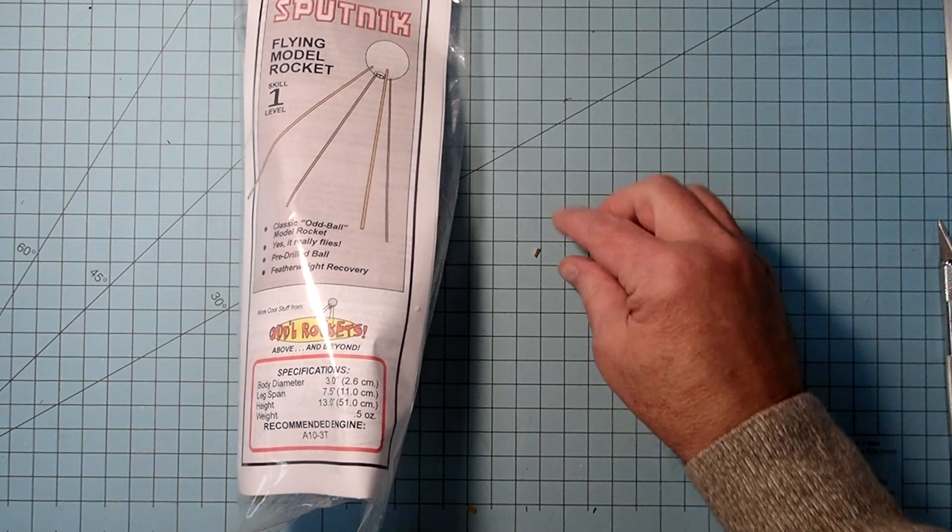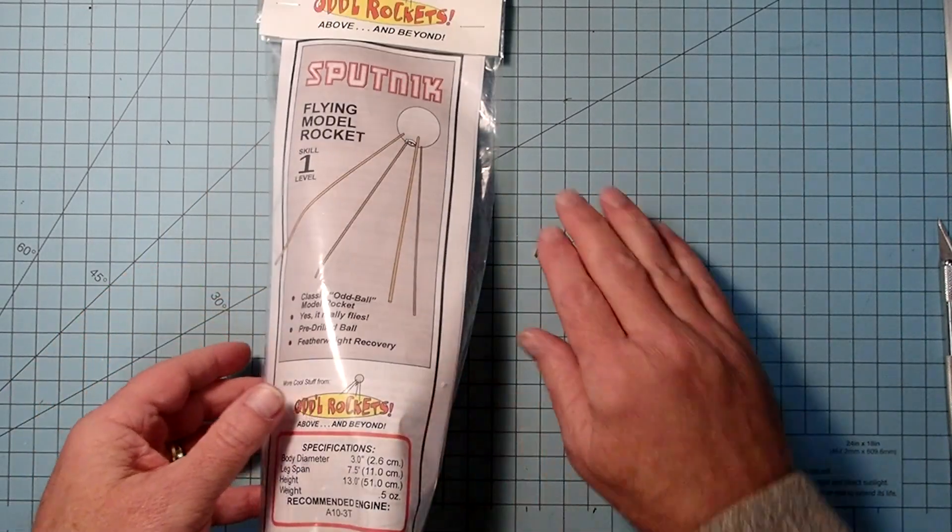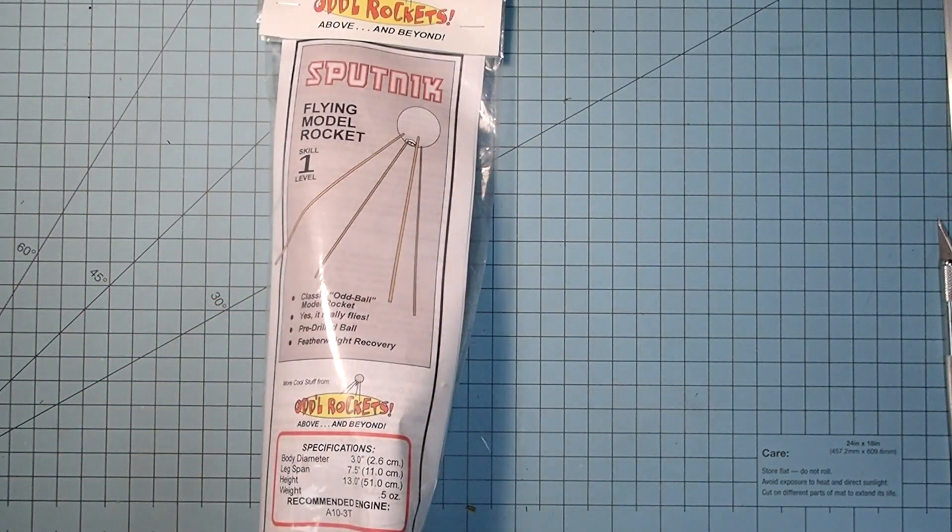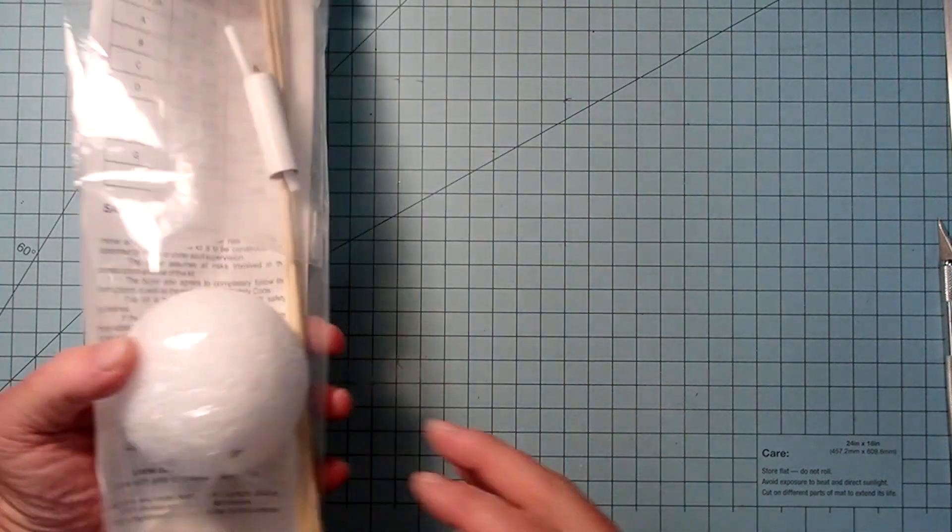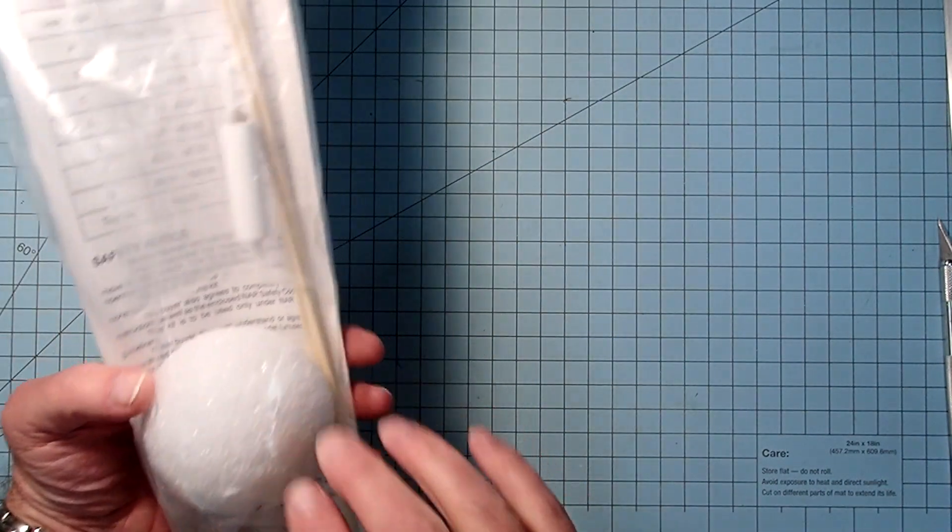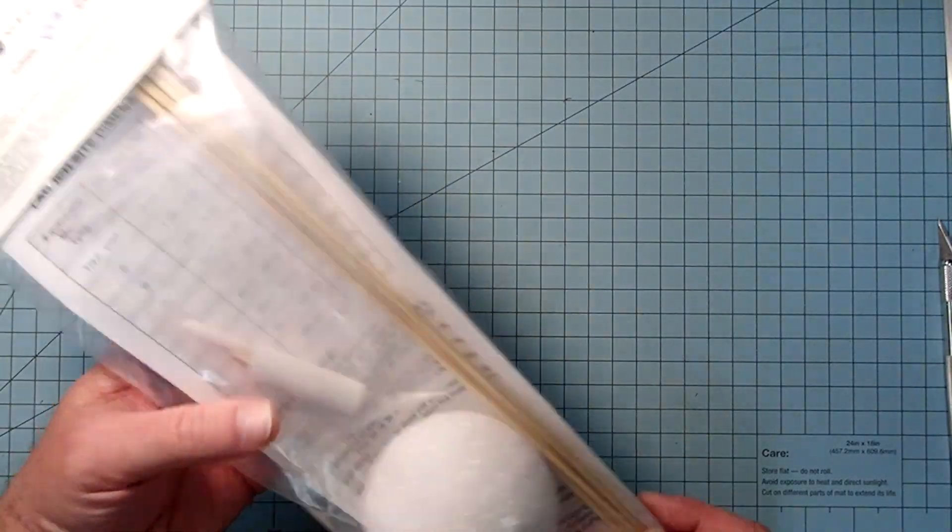Hello again everyone, I'm Dave Thomas and today I am building the Sputnik from Autorockets. This is a relatively simple kit, it's basically a styrofoam ball and some bamboo skewers here.